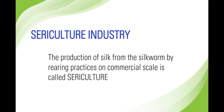The sericulture industry involves the production of silk from the silkworm by rearing practices on a commercial scale. Some important requirements of sericulture are: first, machana — the proper place for rearing the silkworm; rearing trays for keeping the eggs along with the mulberry leaves; spinning frames for keeping the caterpillar at the time of full-grown stage ready for pupation; and a chopping knife for cutting mulberry leaves into smaller pieces.